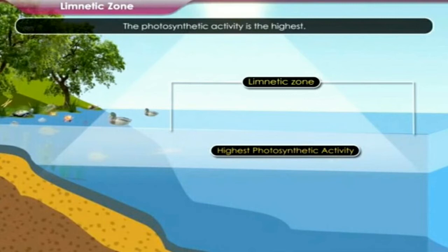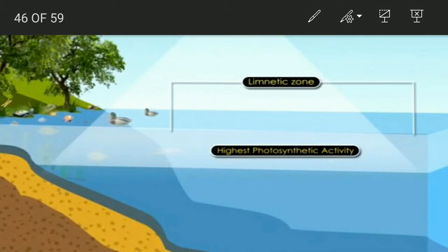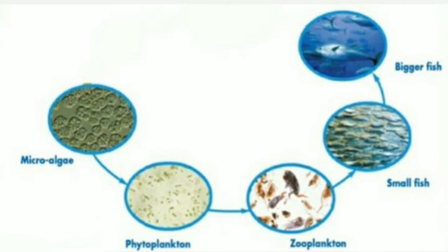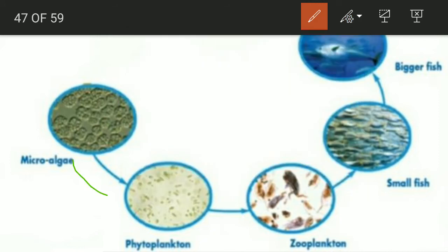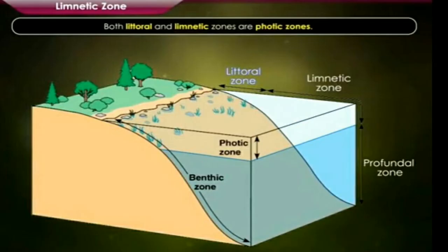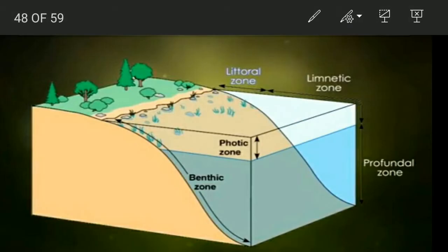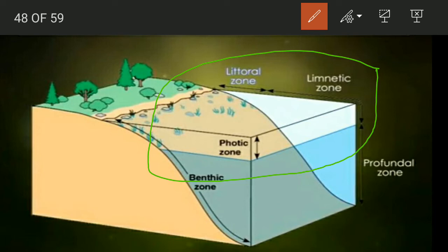The photosynthetic activity is the highest in this zone. The photosynthetic activity in the littoral zone is high, but it is highest in the limnetic zone. A food chain in the limnetic zone: microalgae or phytoplanktons are eaten by zooplanktons, which include crustaceans and protozoa, eaten by small fish, and small fish eaten by bigger fish. Both the littoral and limnetic zones are photic zones — enough light penetrates in these zones and both are photosynthetic zones, as photosynthesis depends on light penetration.